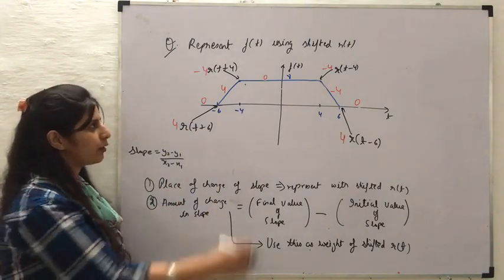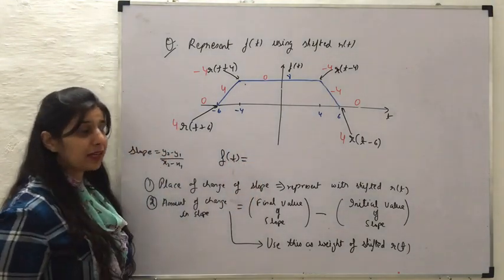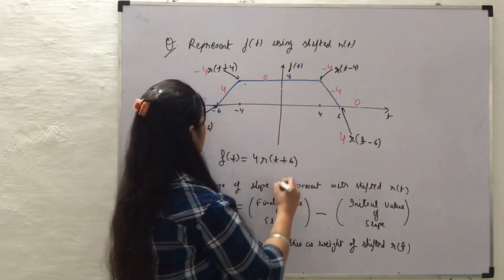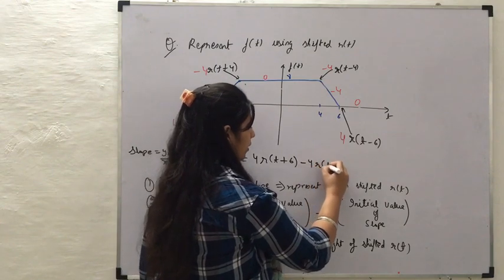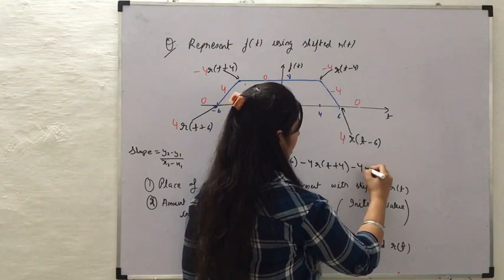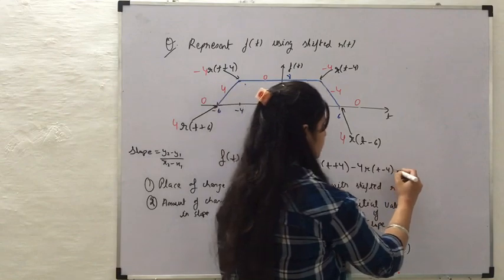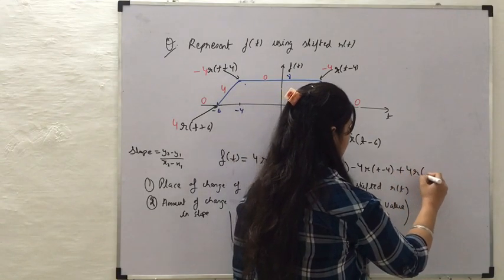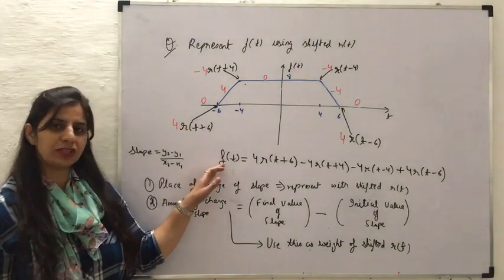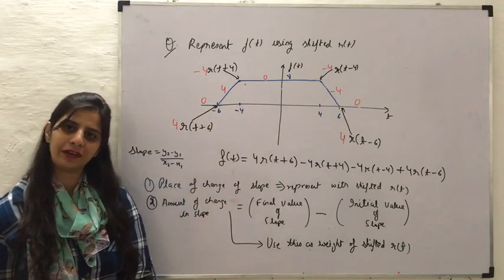So let us form the equation of this function f(t). In terms of the shifted ramp signals: f(t) = 4R(T + 6) − 4R(T + 4) − 4R(T − 4) + 4R(T − 6). This is how any function whose changes occur in the form of slope can be represented with shifted ramp signals.